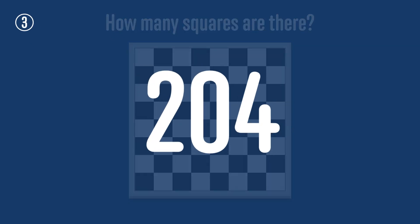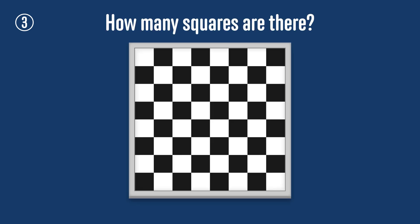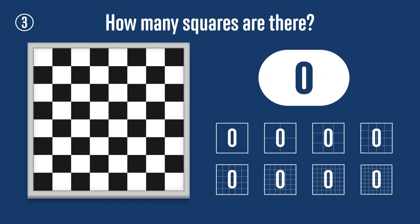The answer to this challenge is 204. You might like to try again before reaching the solution if you got something else. We'll solve this problem by thinking about how many squares there are of each size. The chessboard has eight rows and eight columns, so there are eight times eight or 64 one by one squares.